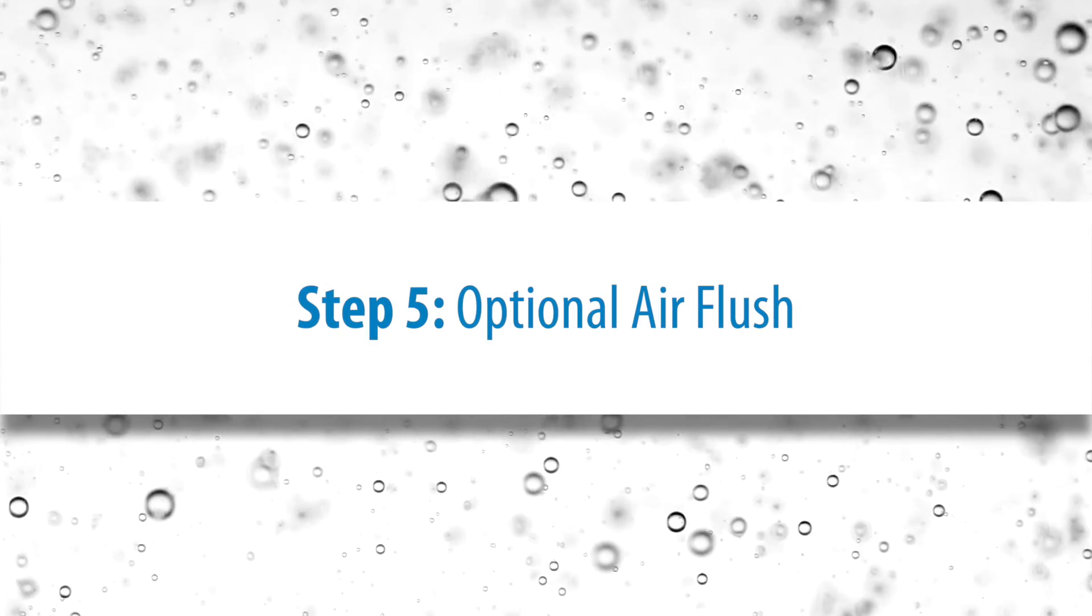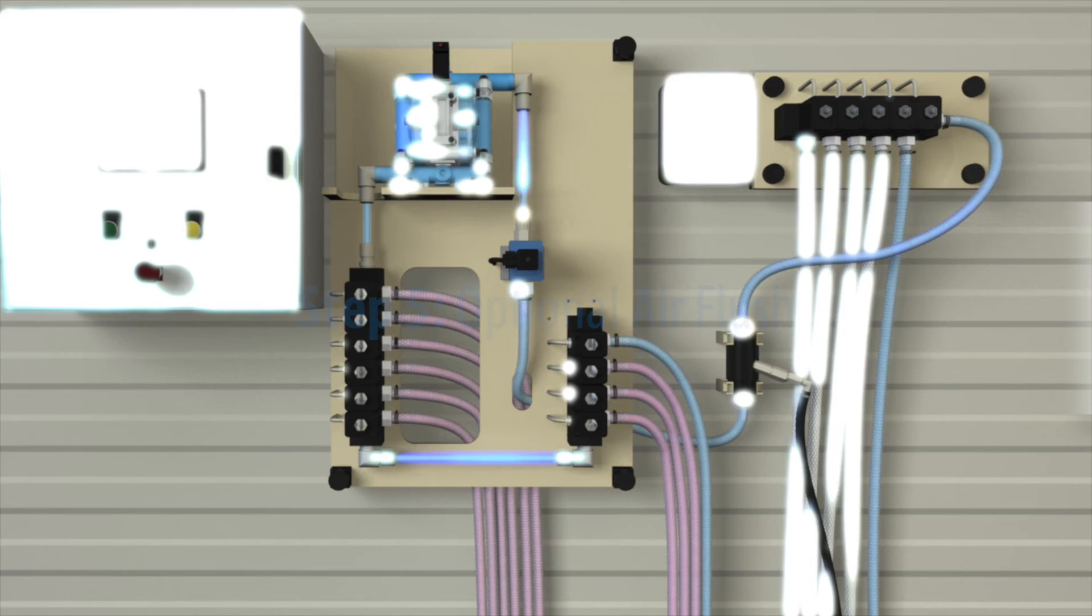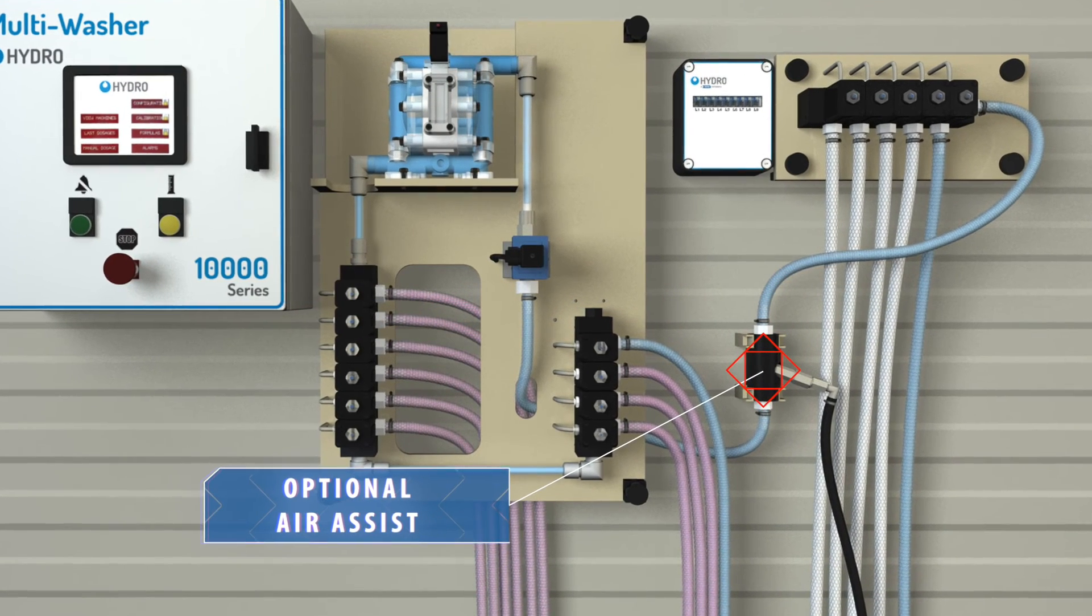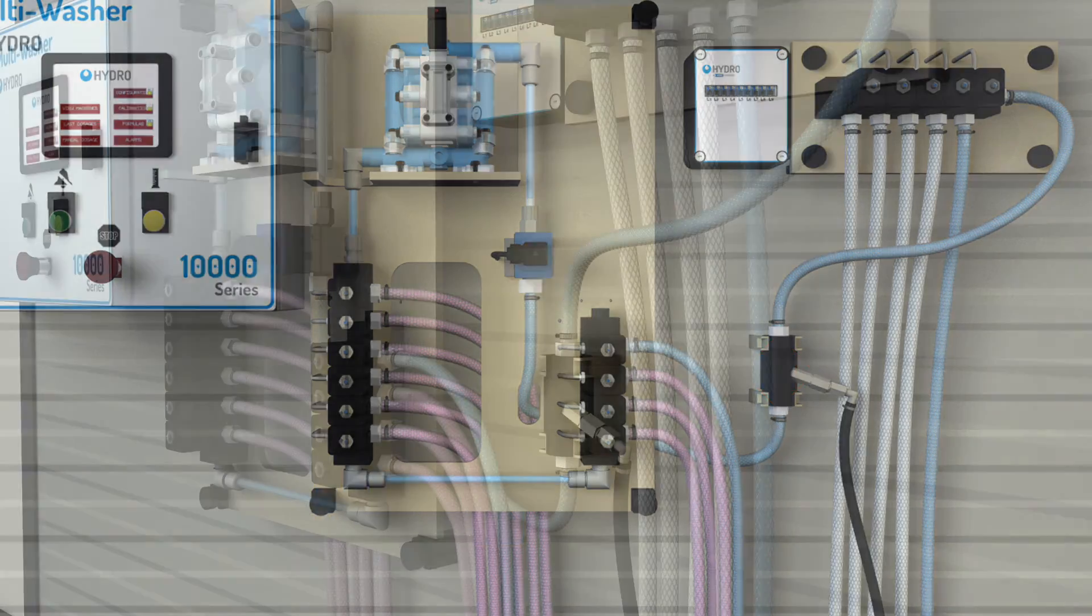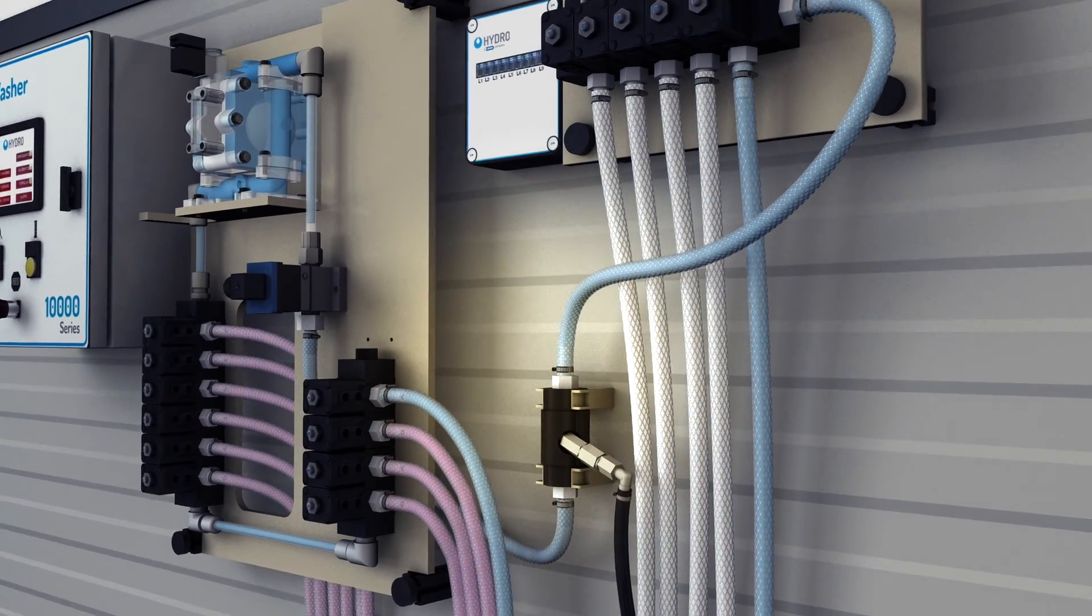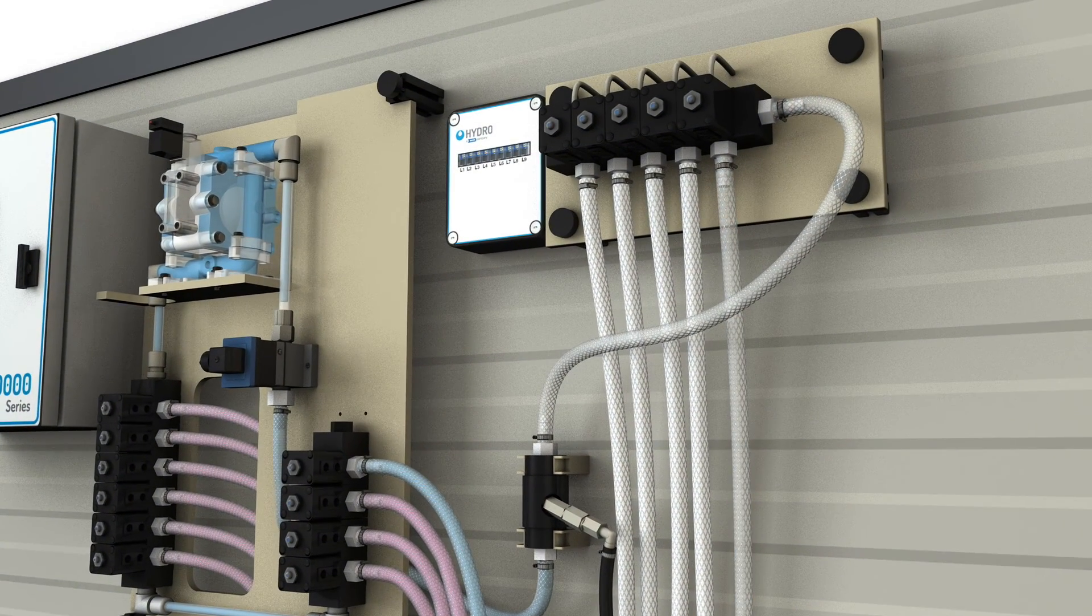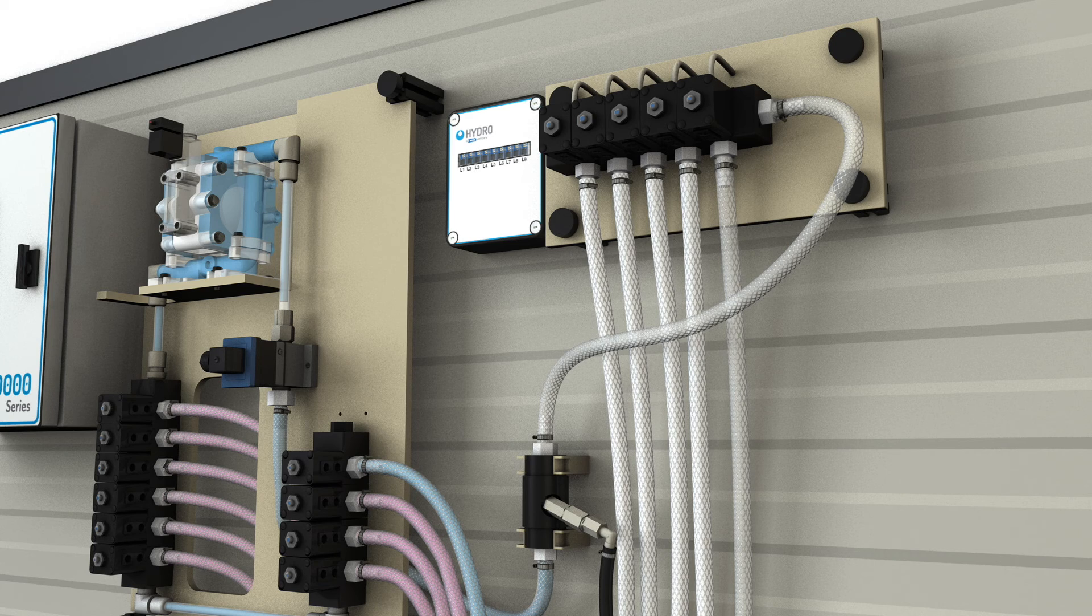Step 5: optional air flush. In some instances, an optional air assist flush may be desired. The air assist module sends air through the lines between the flow meter and the distributor valves to fully flush all of the chemical and water to the washer in a fraction of the time of traditional flushing methods.